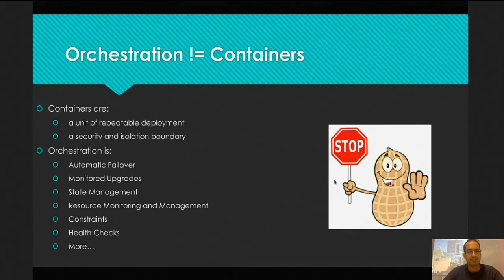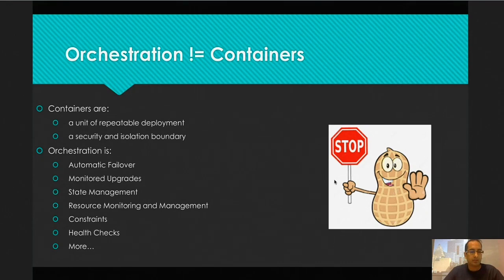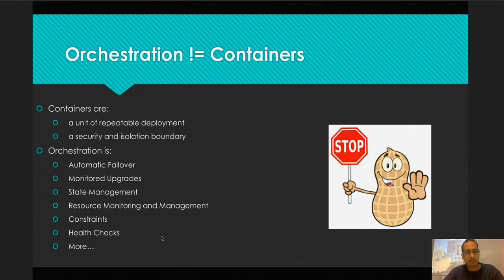A quick word around orchestration and containers — they're not the same. Sometimes the lingo gets a little confusing because containers are a unit of deployment, and orchestration is something that is not essentially the packaging itself. It allows you to do automatic failover, monitoring, upgrades, making sure which node is running, what type of cluster, keeping everything up to date. You can actually use orchestration engines like DCOS to run non-container workloads, so orchestration can be broader in terms of usage pattern.